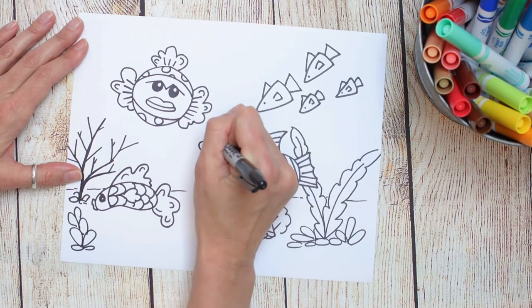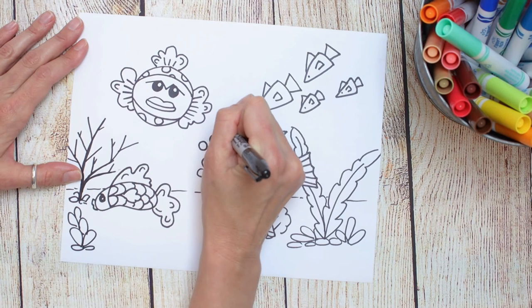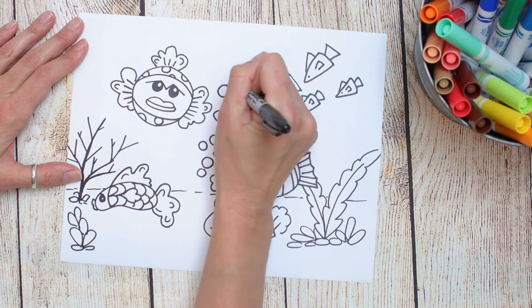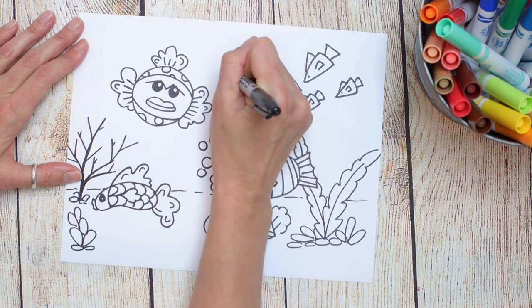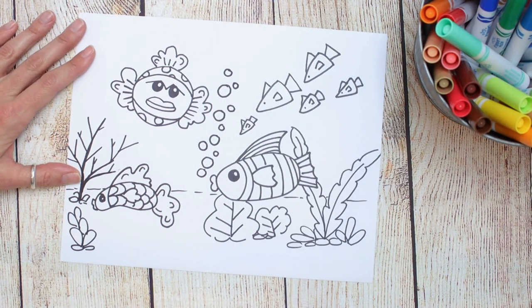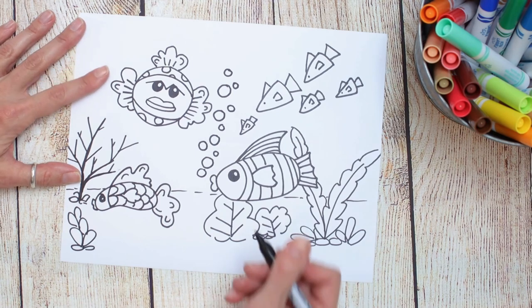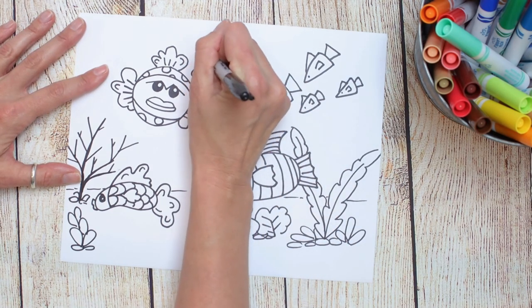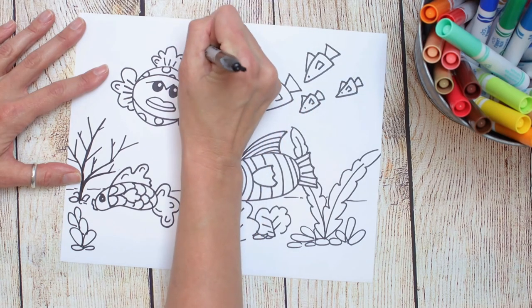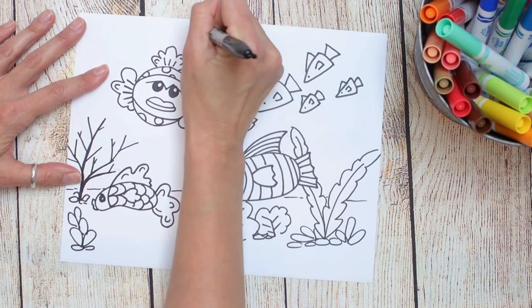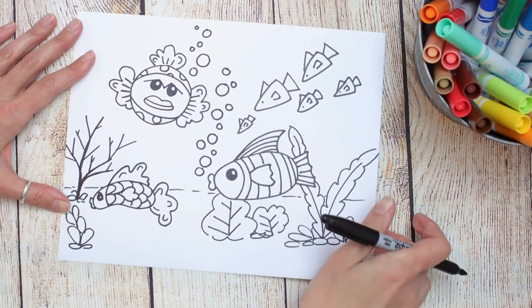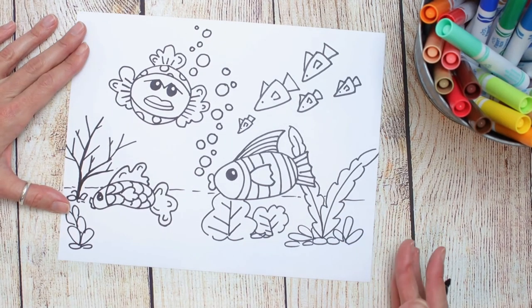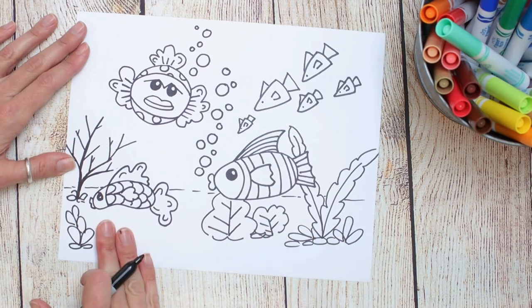Now look at your drawing as a whole composition and see if you have any empty areas. I'm looking around for spots that look like they could use a little interest and make sense for some bubbles, some air bubbles to be coming from my fish. Just a fun, playful little detail. And I love that it's repeated over and over that same circular shape. I think repeating the same thing over and over really can pull your whole composition together. So if you have room for that, you can do it now. If not, no big deal.